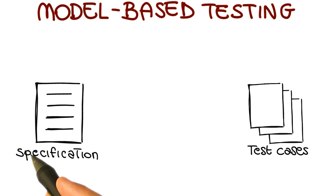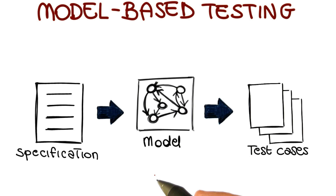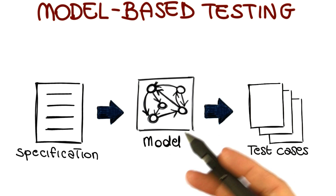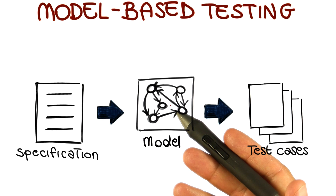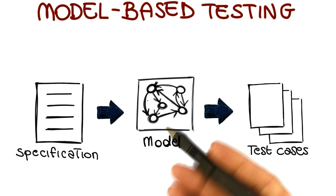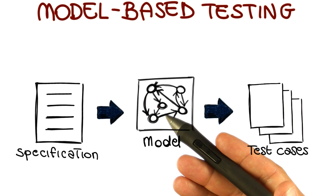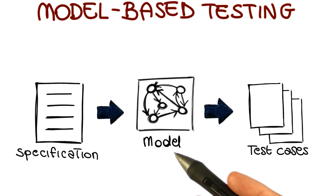In model-based testing, the way in which we go from specifications to test cases is through the construction of a model, where a model is an abstract representation of the software under test. There are many possible models that we can use, and we're going to focus on a specific kind of model. I'll point you to additional sources of information in case you're interested in seeing other examples.